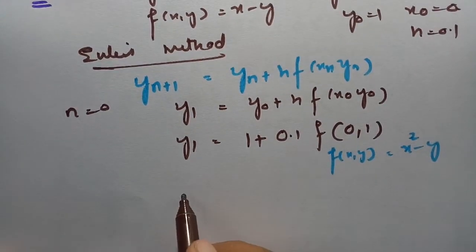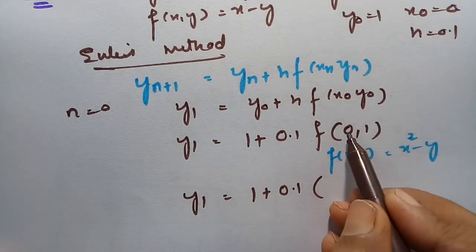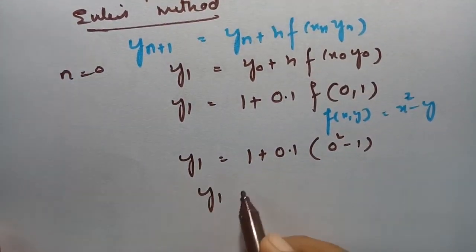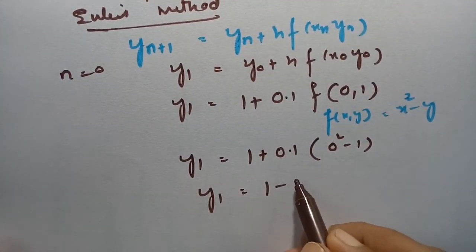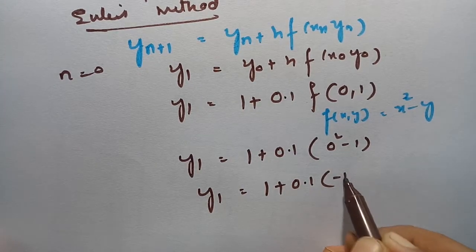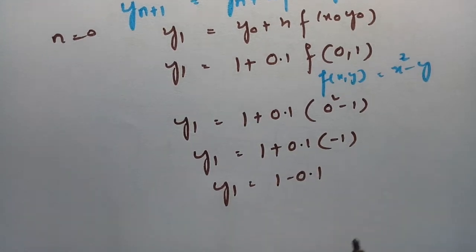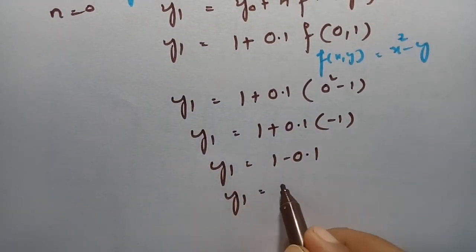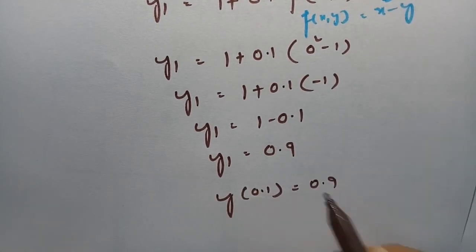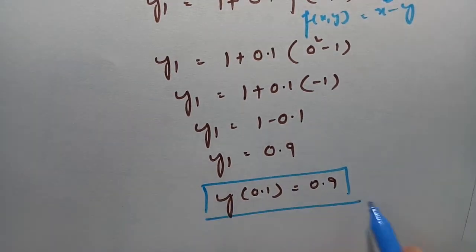Substituting into the Euler's formula with n = 0: y₁ = y₀ + h·f(x₀, y₀) = 1 + 0.1 × (0² - 1) = 1 + 0.1 × (-1) = 1 - 0.1 = 0.9. So y at 0.1 is 0.9.